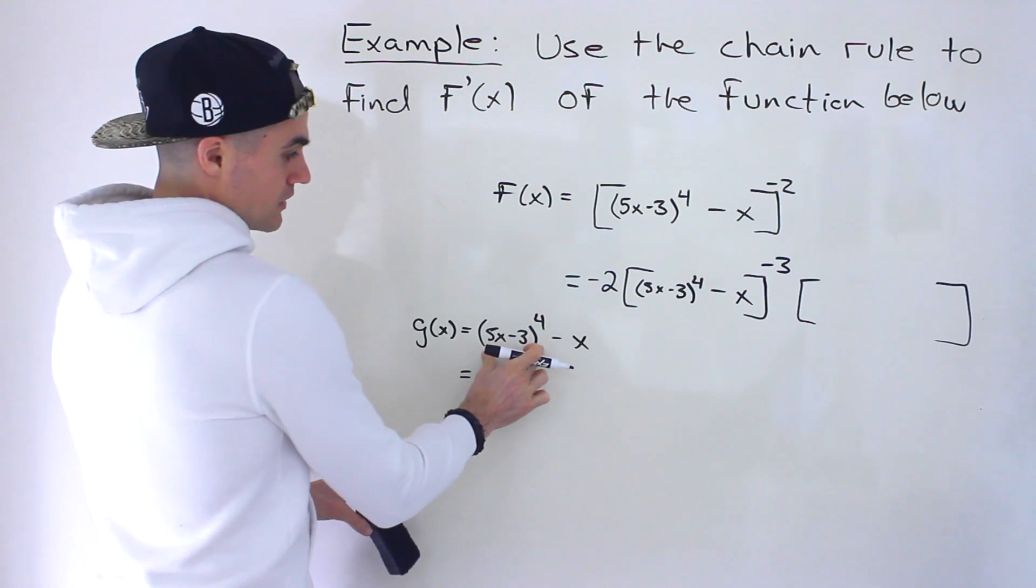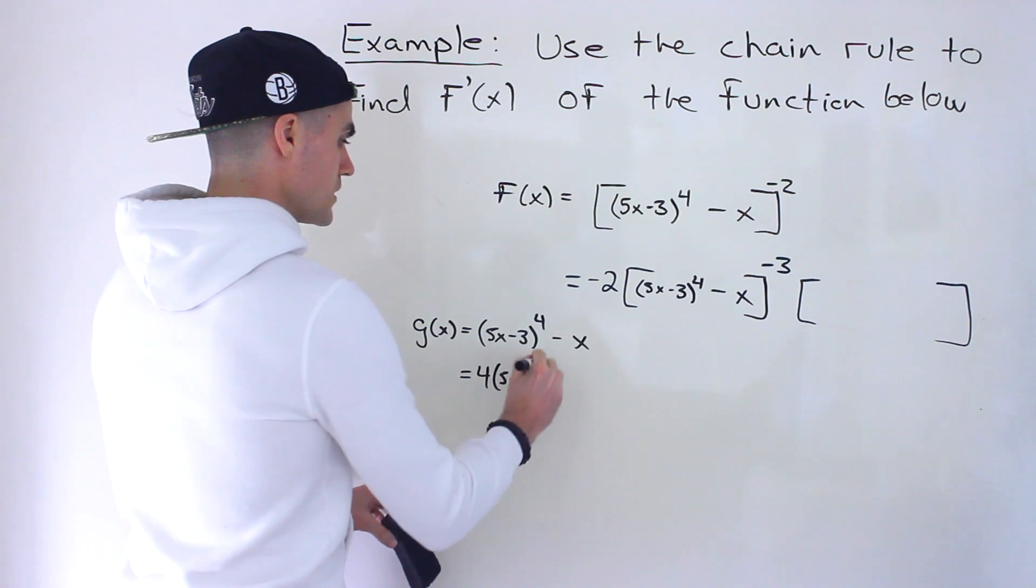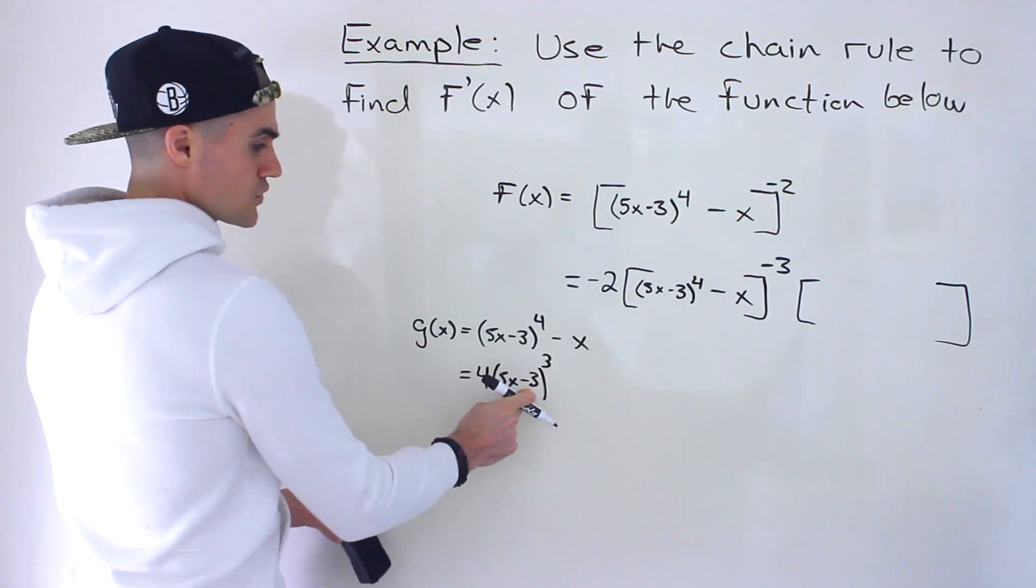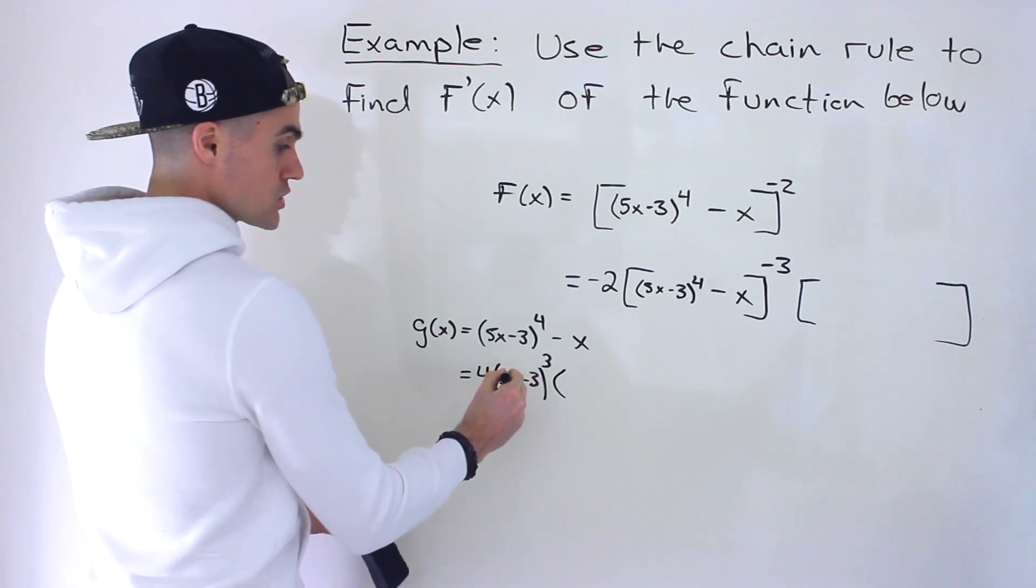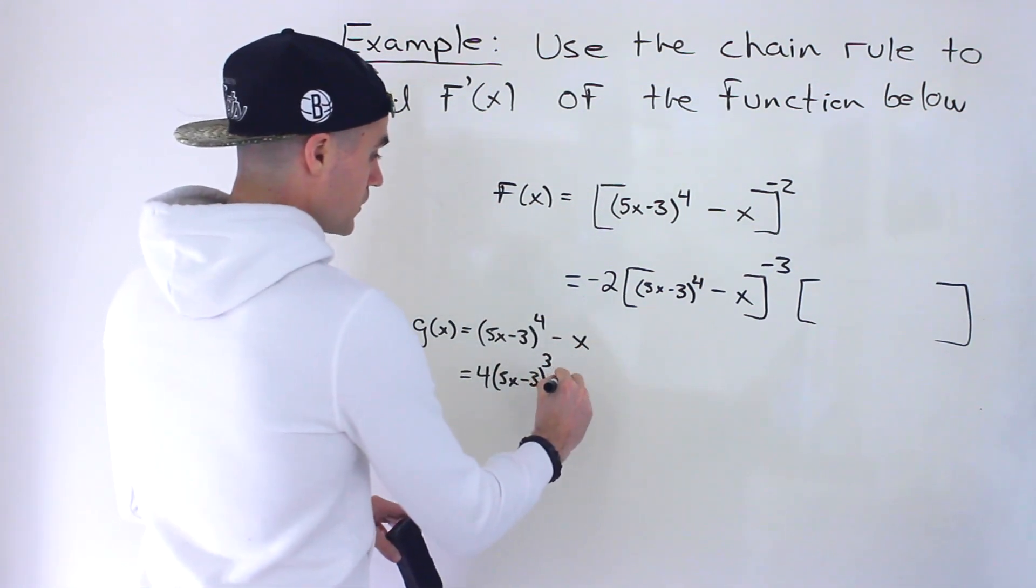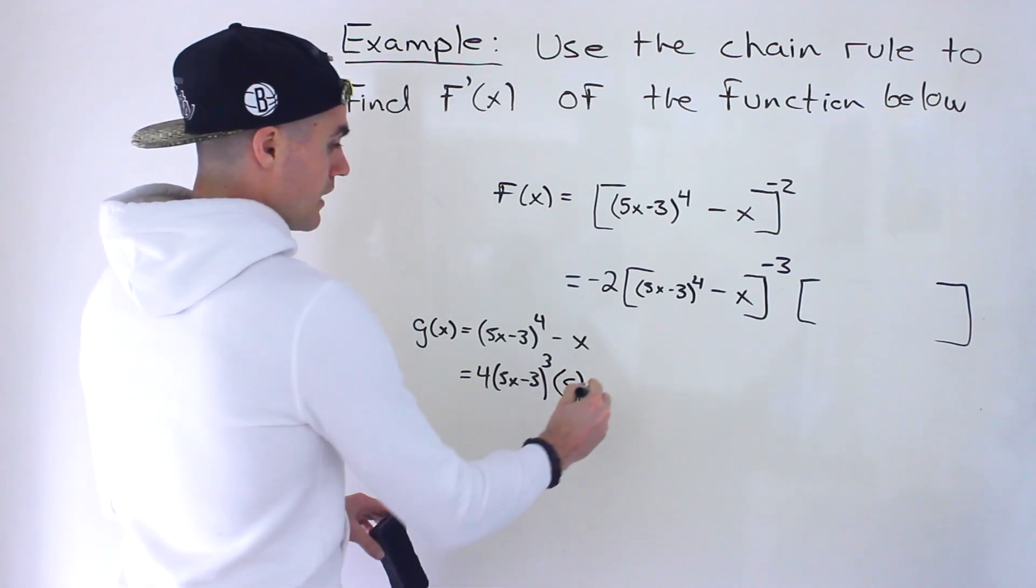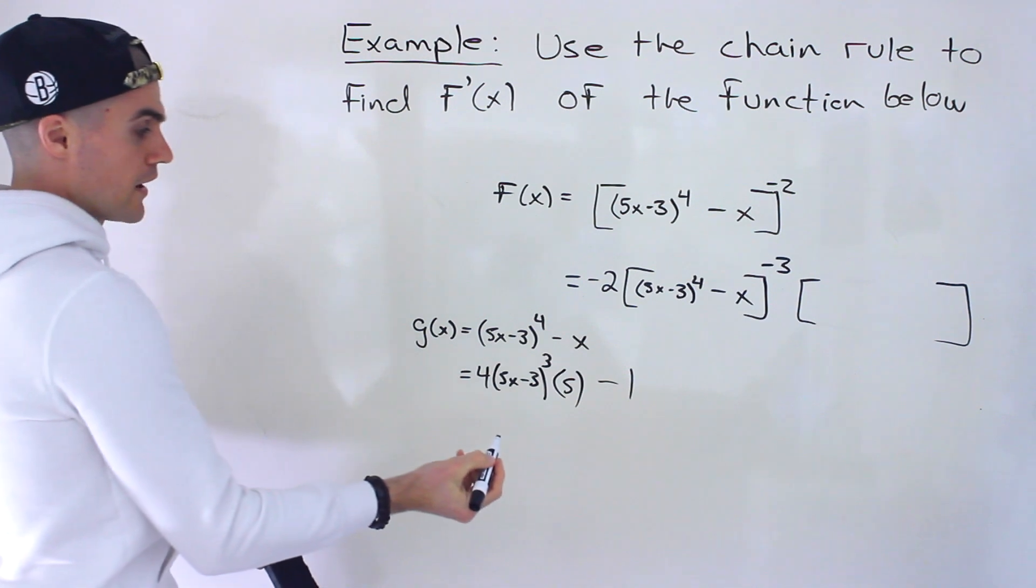So taking the derivative of this, we would bring the 4 down. We would subtract 1 from the exponent, keeping this inner function the same. And then we've got to multiply it by the derivative of that inner function. The derivative of 5x - 3 would give us 5. And then we would subtract the derivative of x, which is just 1.